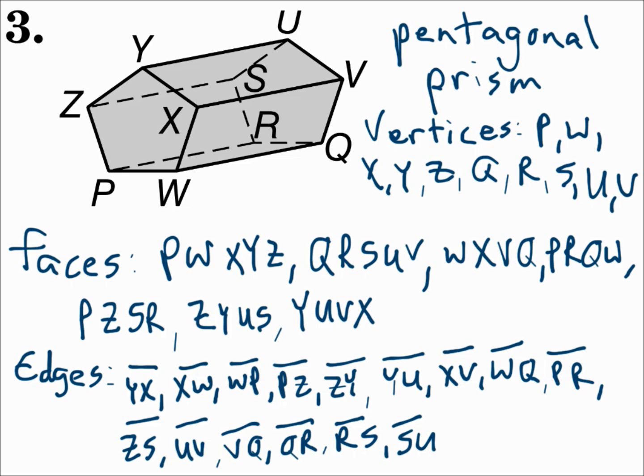Just make sure you label everything correctly. The faces are named in order, from one point wrapping around to the end. Edges are segments, two endpoints with the bar over top. And the vertices are just the capital letter for their point.